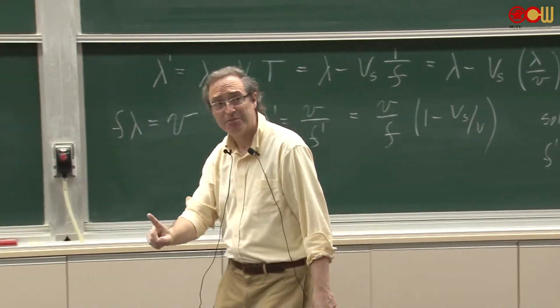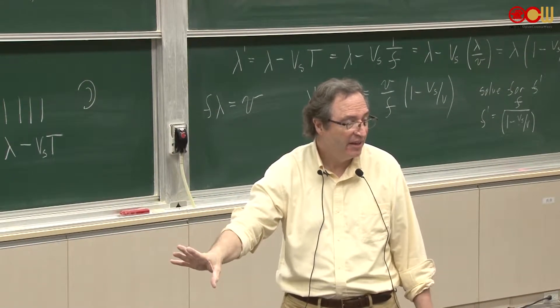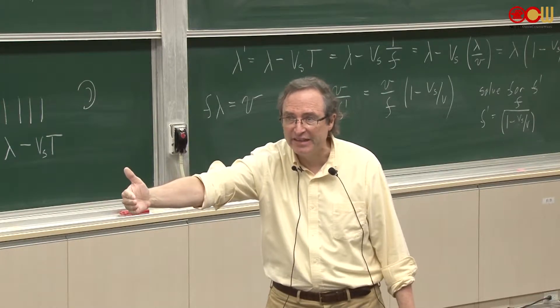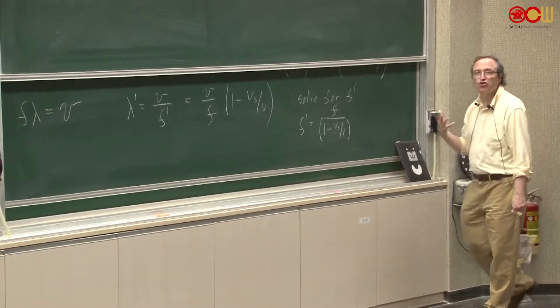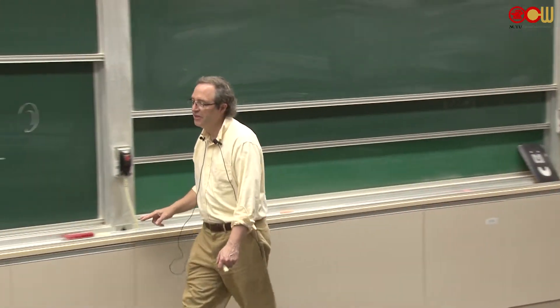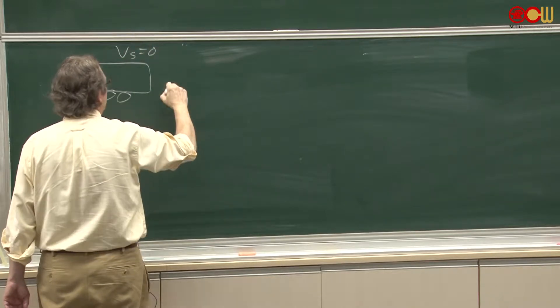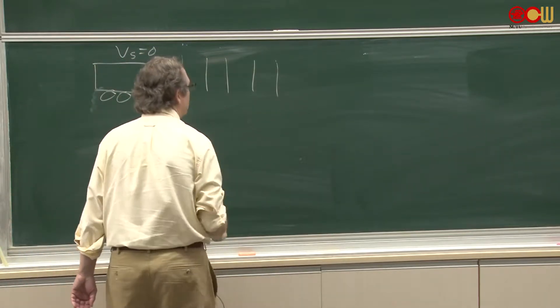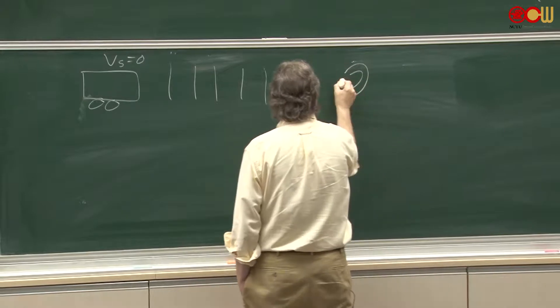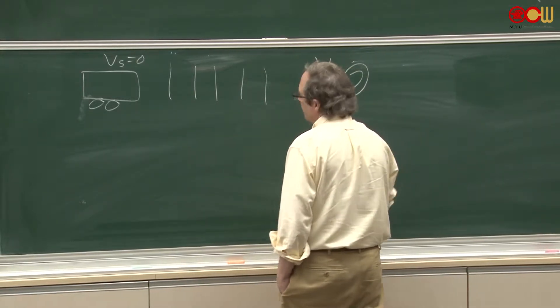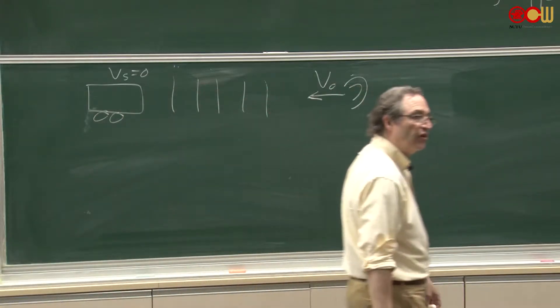Now let's look at another aspect. What happens if the source is stationary, but the observer is moving. So let's do that case. So now we're going to look at the source is stationary, but the observer moves. So here's the source and stationary. V s equals zero. It's putting out waves like this. And here's the observer. Draw that here. And it's moving the observer. So we use a positive if it's moving towards the source.